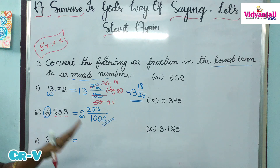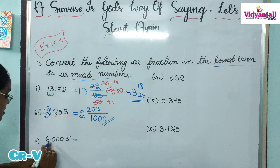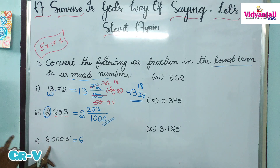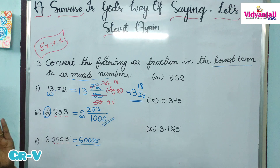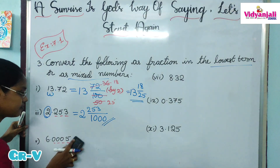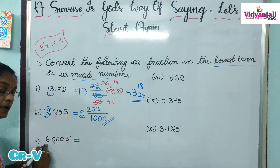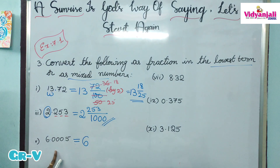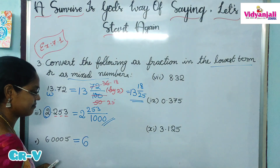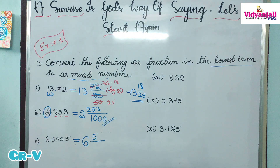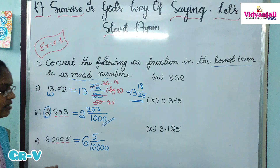Next: 6.0005. Method one: without the point, the numerator is 60005. Count how many digits in the decimal part — 4 digits — so denominator is 1 after 4 zeros: 10000. Method two: whole part is 6. In the decimal part we have 0, 0, 0, 5 — which equals just 5. So write 6 and 5 by 10000, since there are 4 digits in the decimal part.